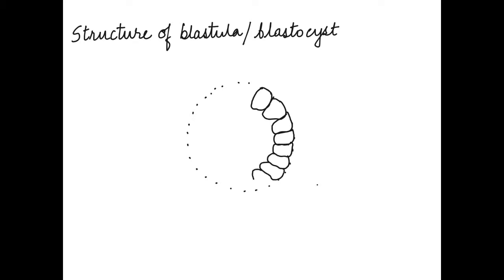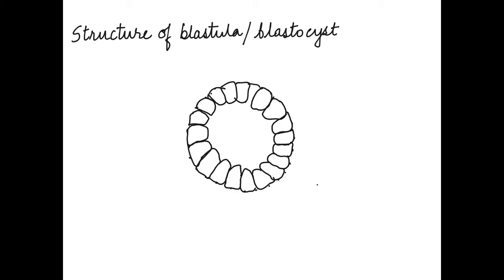The blastula is formed after zygote formation. The zygote divides to form 2 cells, then 4, 8, and a 16 cell structure. This 16 cell structure is a solid ball of cells called morula. The morula then further divides to form a ball of cells which is more than 32 cells with a cavity. This is called the blastula or the blastocyst.